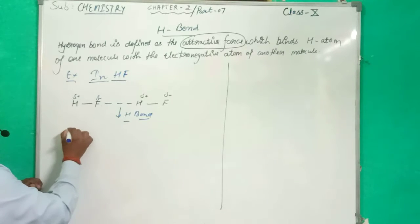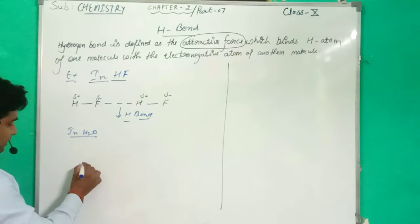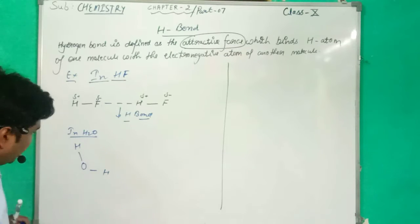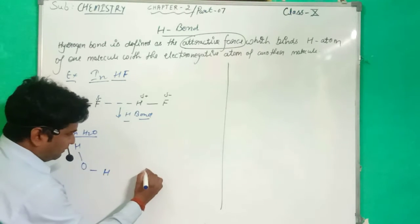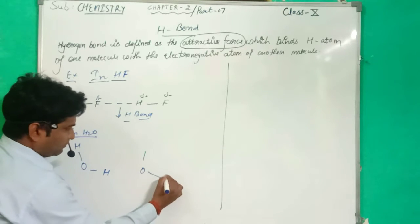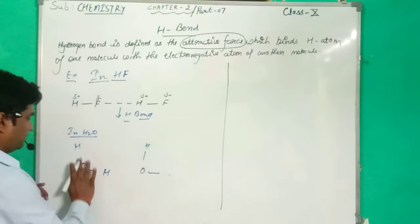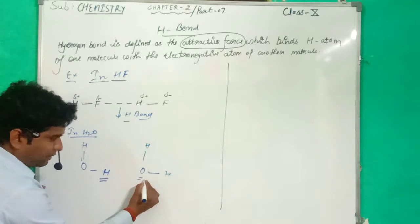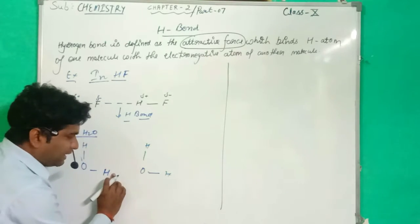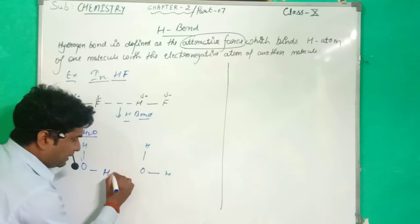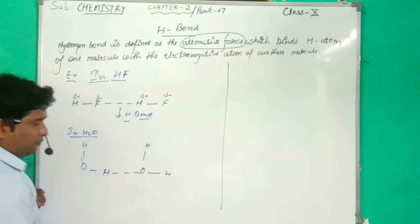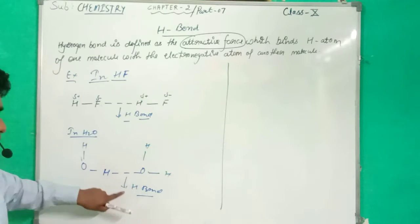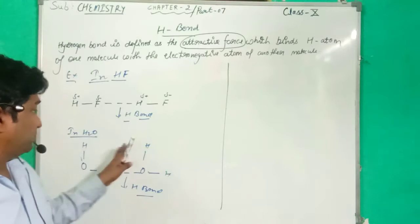Take another example — H2O, the water molecule. In the water molecule structure, one molecule is here and another one here. This is the Hydrogen atom, and this is the Oxygen atom. Oxygen is more electronegative than Hydrogen, so the Hydrogen atom is attracted towards the Oxygen atom, and that is why they form the Hydrogen Bond. The Hydrogen Bond is shown with a dotted line. Take a screenshot of these examples.